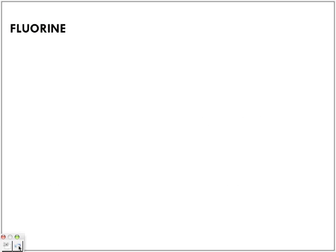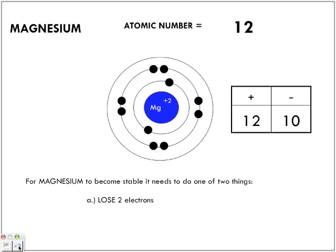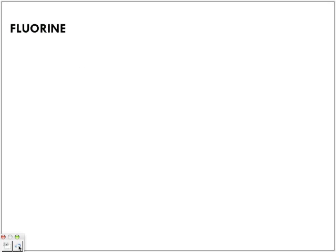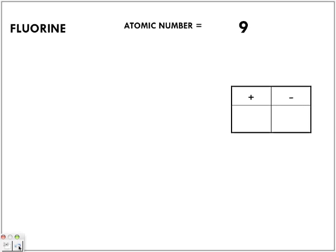Now let's look at the opposite side of the periodic table. We're looking at non-metals. Notice how magnesium and sodium were metals. Moving across the periodic table, we're going to look at fluorine, which is a non-metal, and we're going to see something different happens here. The atomic number of fluorine is nine, which means we have nine protons. Because this is a fluorine atom, it's neutral — it will have nine electrons, no charge. Equal amount.